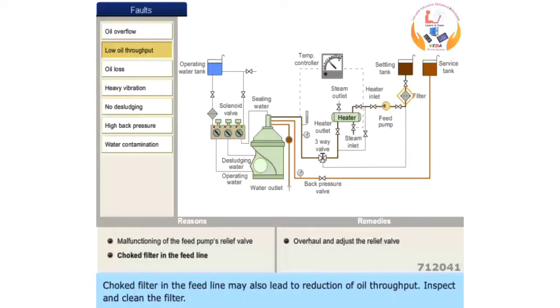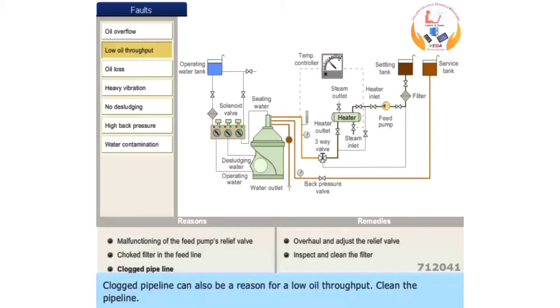Choked filter in the feed line may also lead to reduction of oil throughput. Inspect and clean the filter. Clogged pipeline can also be a reason for low oil throughput. Clean the pipeline.